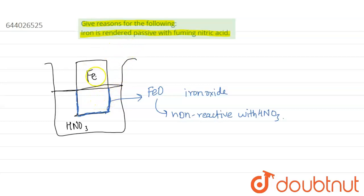So, now this iron has become passive. It will not react at all with the fuming nitric acid. That's why it is said that iron is rendered passive with fuming nitric acid.